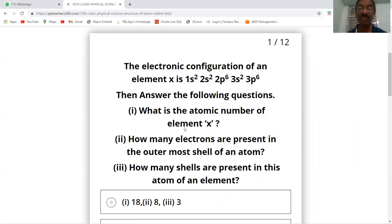What is the atomic number of element X? The atomic number is the total number of electrons. Adding them: 6 plus 2 is 8, plus 6 is 14, plus 2 is 16, plus 2 is 18. The atomic number is 18.